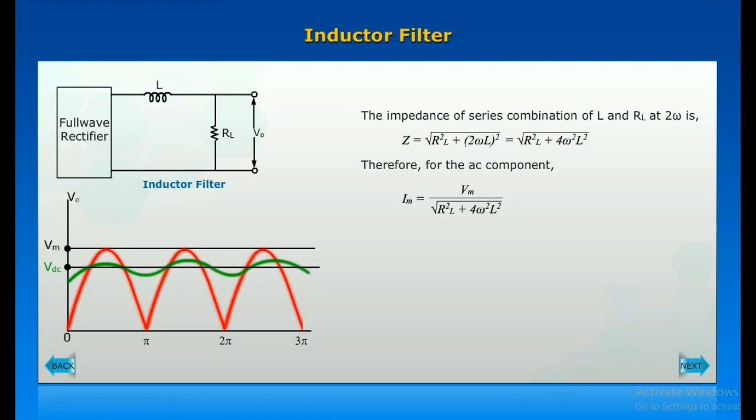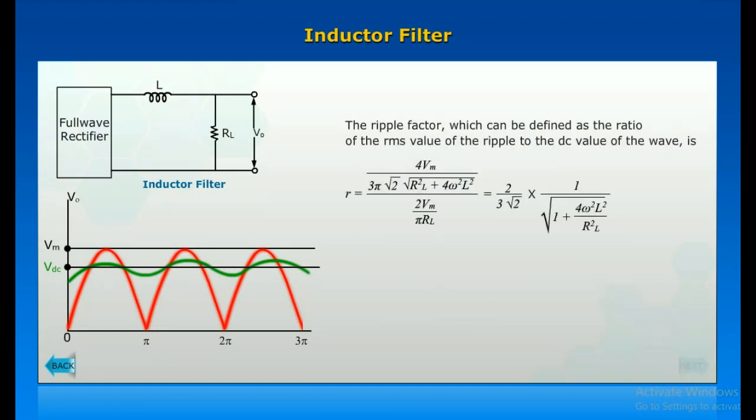The resulting current I is given by the formula. The ripple factor, which can be defined as the ratio of the RMS value of the ripple to the DC value of the wave, is shown.